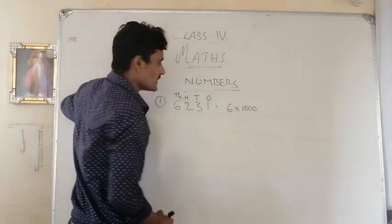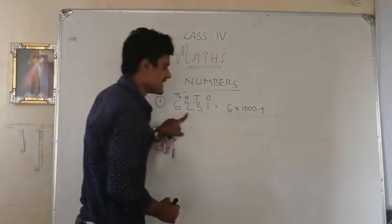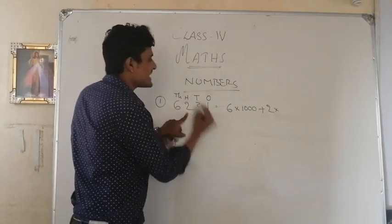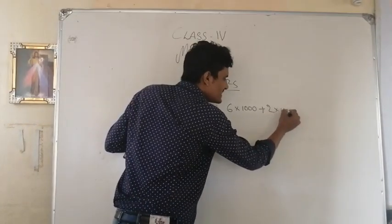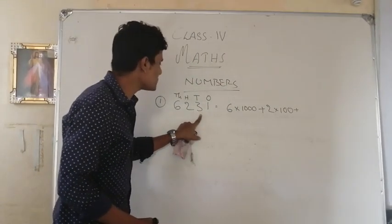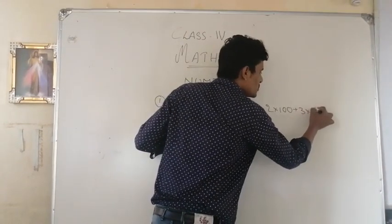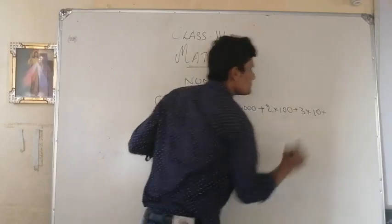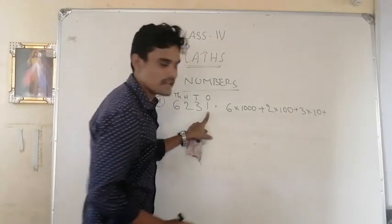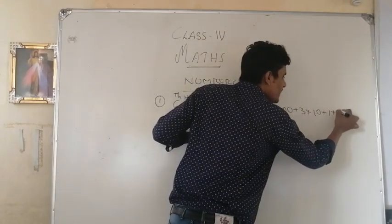What is the place value of 2? 2 is in the 100s place. We can write it as that. 3 is in which place, children? It is in the 10s place. We can write that: 3 in the 10s place. Look at it — what is the place value of the last digit? It is in the 1s place. So, 1 is in the 1s place.